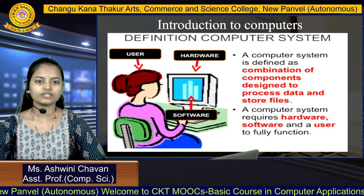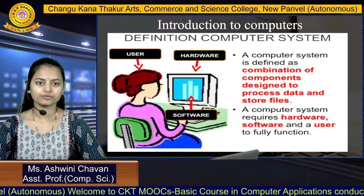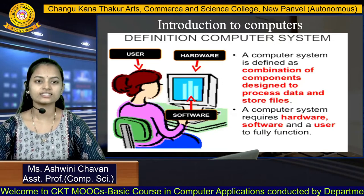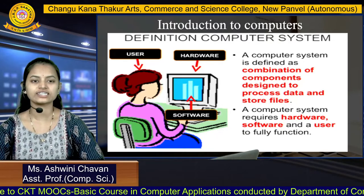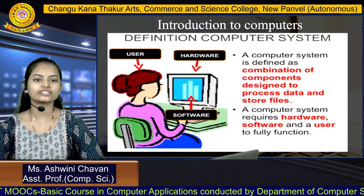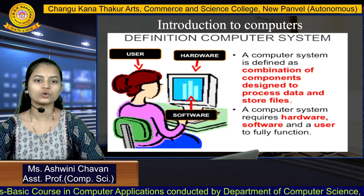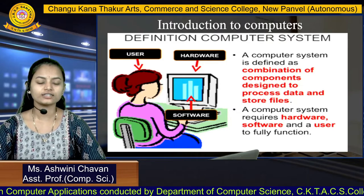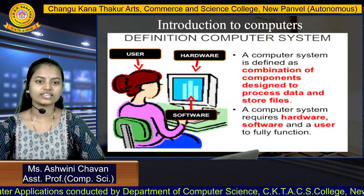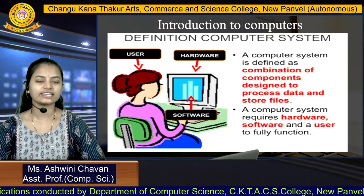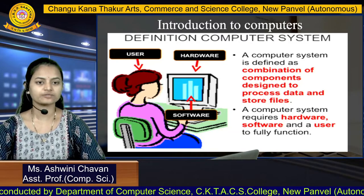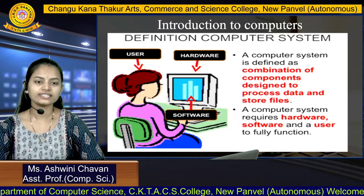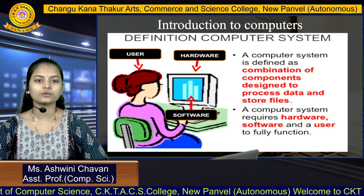First, the definition of the computer system. The computer system is defined as a combination of components which are designed to process data and store files. Once we store particular data in our computer, we can further use that data — we can read it, and we can make any kind of modification in the data as per the user's requirement.